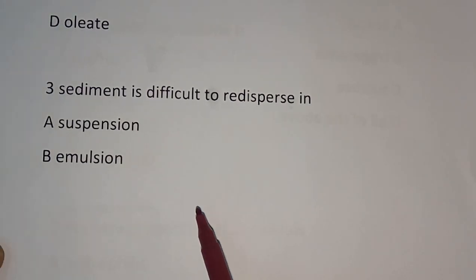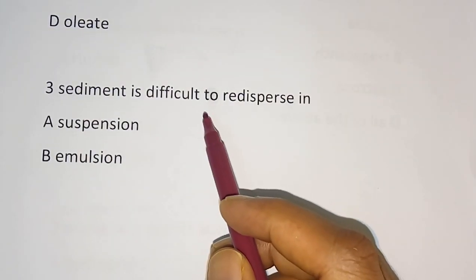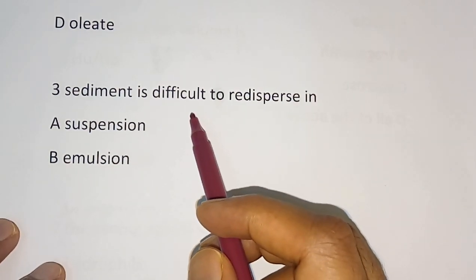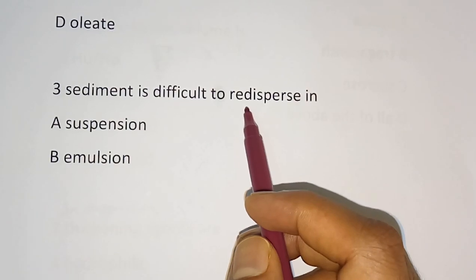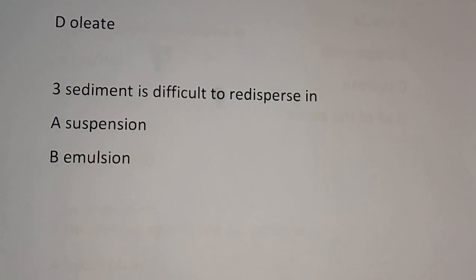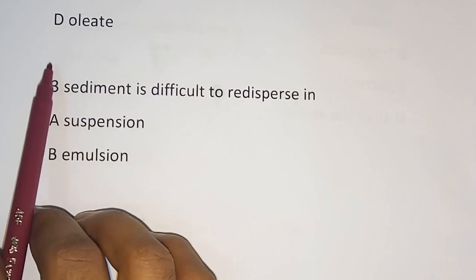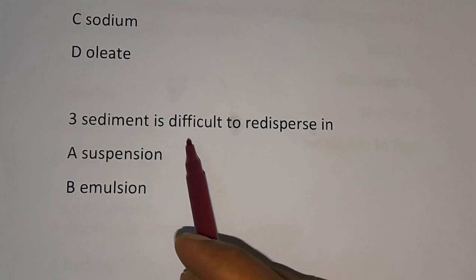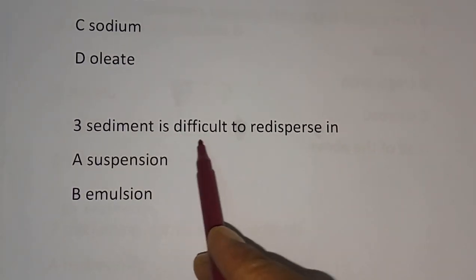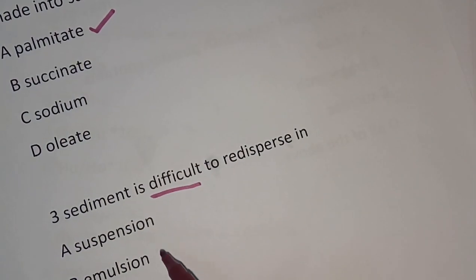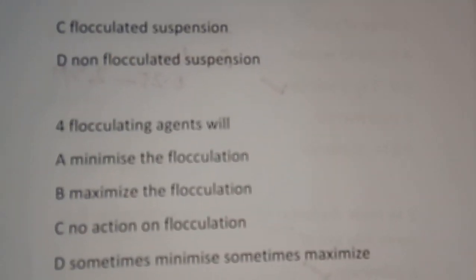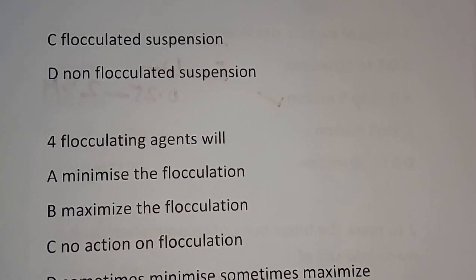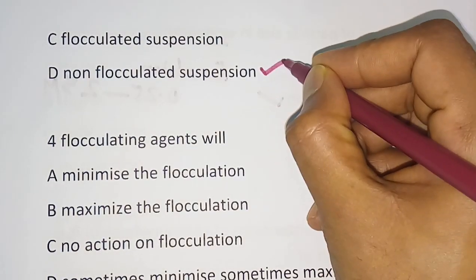Question 3: The sediment which is difficult to re-disperse is formed in. Options are: A) suspension, B) emulsion, C) flocculated suspension, D) non-flocculated suspension. The correct answer is Option D: non-flocculated suspension.